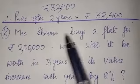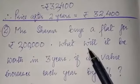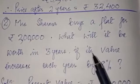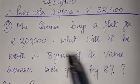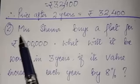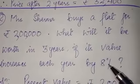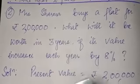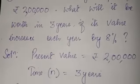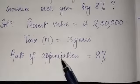Question number two: Mrs. Sarma buys a flat for rupees 2 lakh. What will it be worth in three years if its value increases each year by eight percent? The present value of that house is 2 lakh and its value is increasing by eight percent every year. You have to find its price after three years — this is the case of appreciation. Present value is 2 lakh, time is three years, rate of appreciation is eight percent.